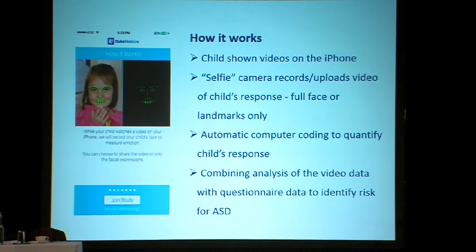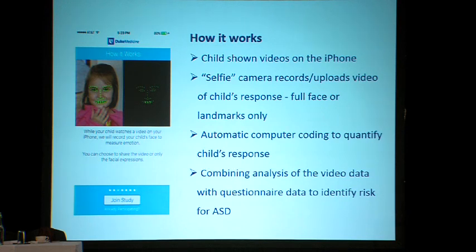So how does it work? The child is shown videos on the iPhone while the selfie camera records the child's responses. Parents can choose either full face or landmarks only to be uploaded and analyzed later. Automated computer coding then quantifies the child's response, and the idea is that by combining analysis of the video data with questionnaire data, you could potentially identify the risk for autism.